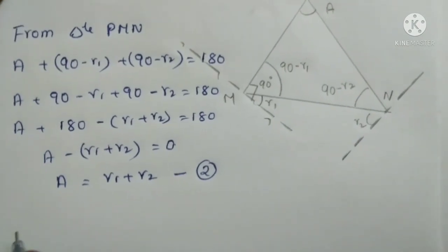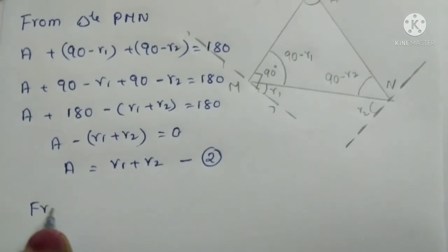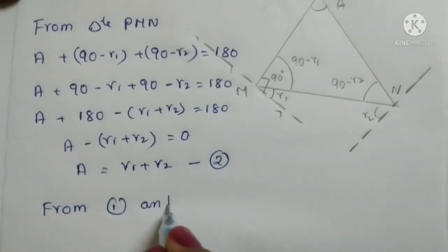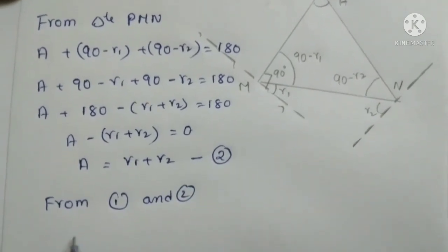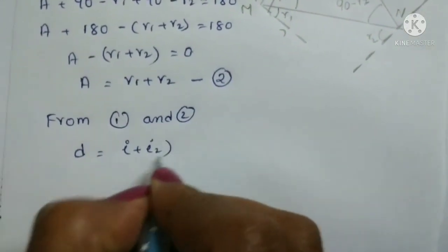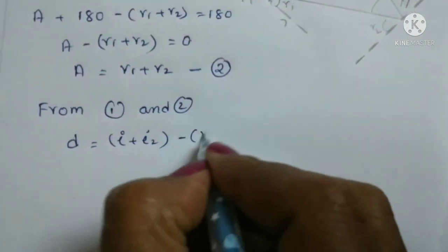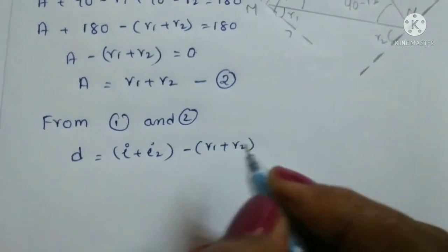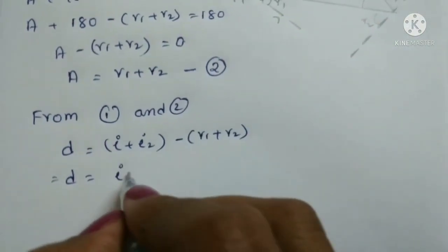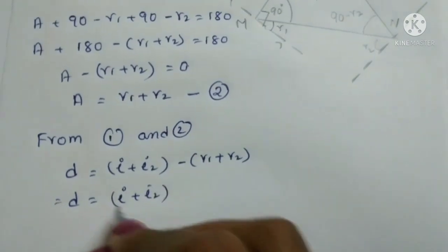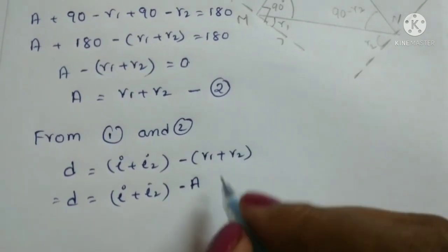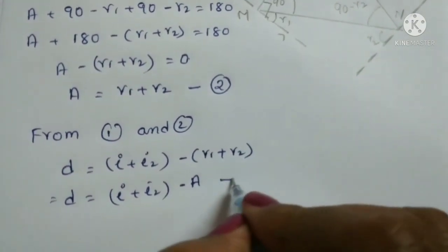Combining equations 1 and 2: D equals i1 plus i2 minus (r1 plus r2). Substituting r1 plus r2 equals A, we get D equals i1 plus i2 minus A. This is equation 3.